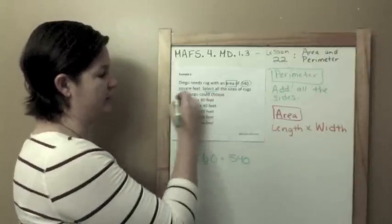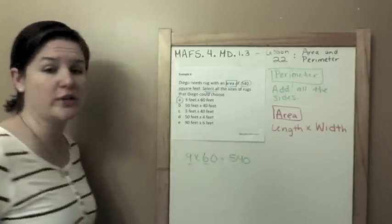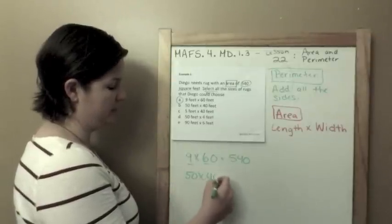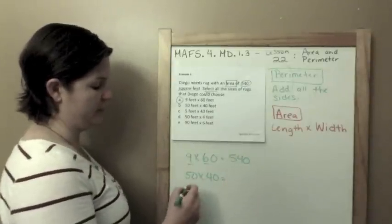9 times 6 equals 54, we have a zero zero, so yes, that would give us 540 square feet.